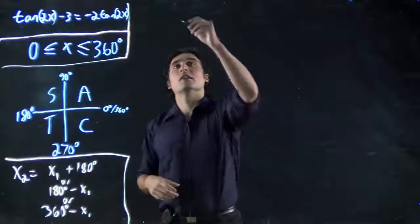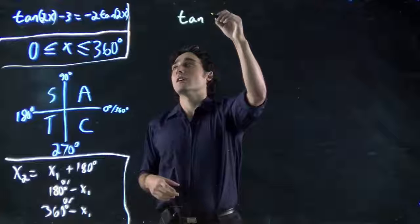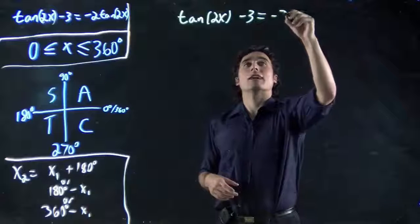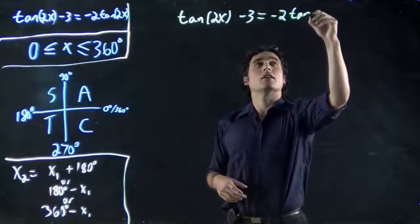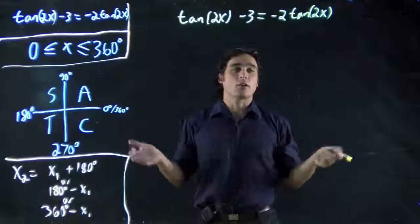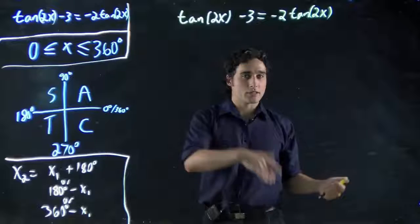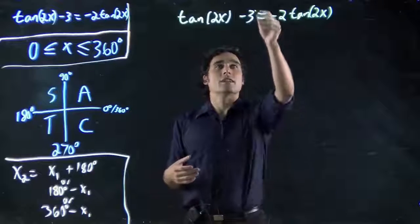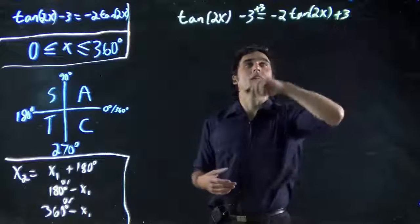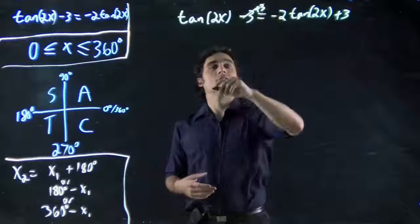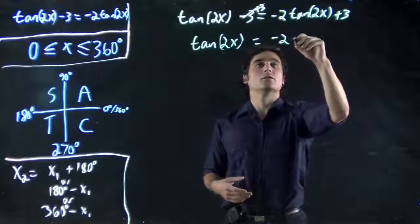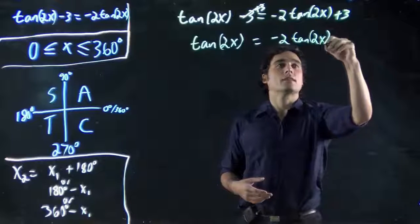Let's start solving this. Because what we have is tan(2x) - 3 equals -2tan(2x). As always, we want to get all of the x's to one side, all the numbers to the other side. So what do we want to do first? Well, in this case, we can add 3 to both sides. That will cancel. And I'm going to have tan(2x) equals -2tan(2x) + 3.